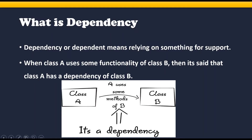What is Dependency? Dependency or Dependent means relying on something for support. If class A uses some functionality of class B, then class A has a dependency on class B. If class A wants to consume some methods of class B, then class A needs an object of class B. This is called Dependency.